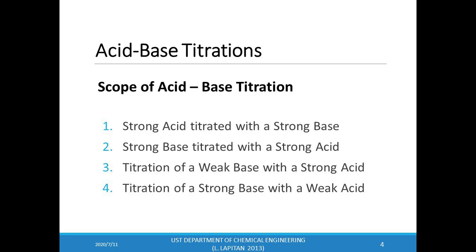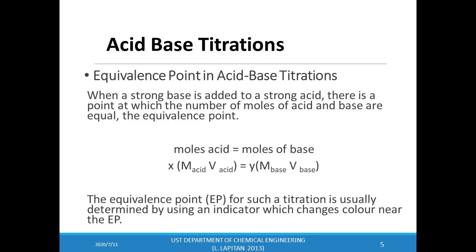There are four major types of acid-base titrations: a strong acid titrated with a strong base, a strong base titrated with a strong acid, a titration of a weak base with a strong acid, and the titration of a weak acid with a strong base. Always remember that the titrants are dilute solutions of strong acids and strong bases.